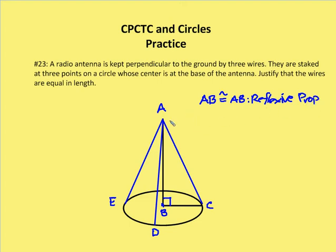And I know that the antenna AB is perpendicular to the ground, so it's defined. So I know that angle ABC is going to be congruent to angle ABE, which is going to be congruent to angle ABD. And the reason is because all right angles are congruent.